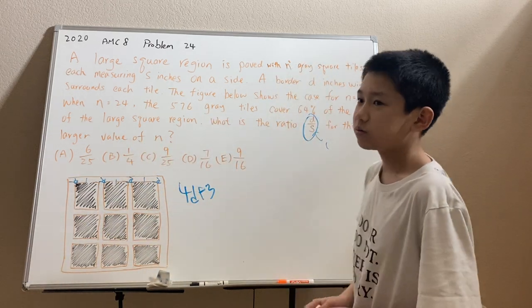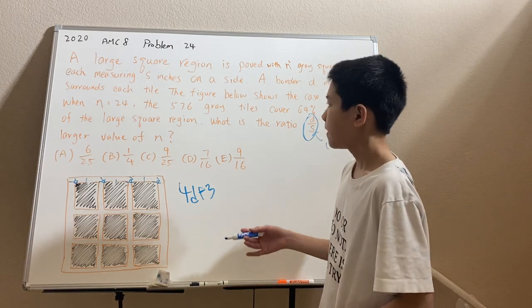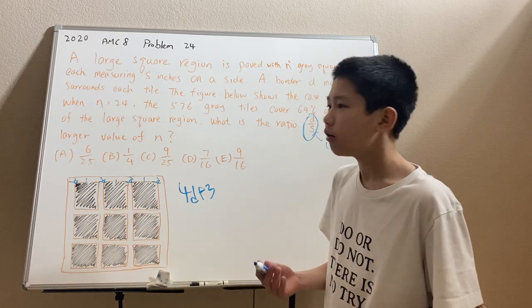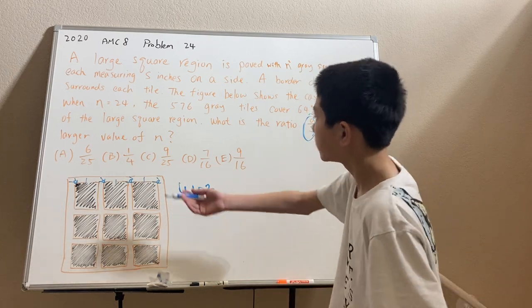Now we want to find the case where n equals 24. And we can do something very similar for n equals 24. We don't actually want to draw the diagram out, but find a pattern from the n equals 3 case.